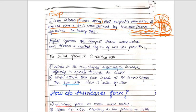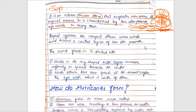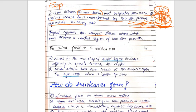So you can see the cyclone effects. Tropical cyclones are compact storms whose winds swell around the central region.